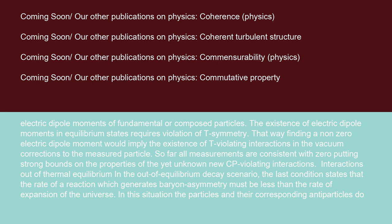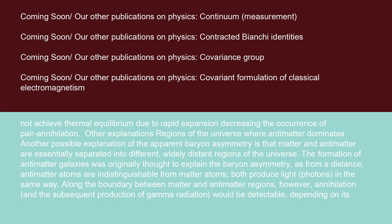Interactions out of thermal equilibrium. In the out-of-equilibrium decay scenario, the last condition states that the rate of a reaction which generates baryon asymmetry must be less than the rate of expansion of the universe. In this situation, the particles and their corresponding antiparticles do not achieve thermal equilibrium due to rapid expansion, decreasing the occurrence of pair annihilation.